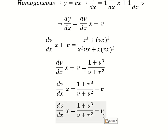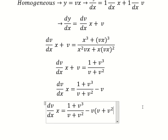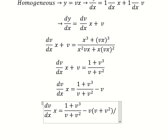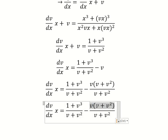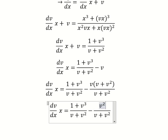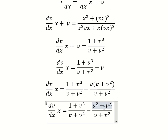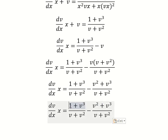Next, we can do common denominator. This gives us v squared and v to the power of 3. Next, this one minus this one — so now we just have only 1 minus v squared.